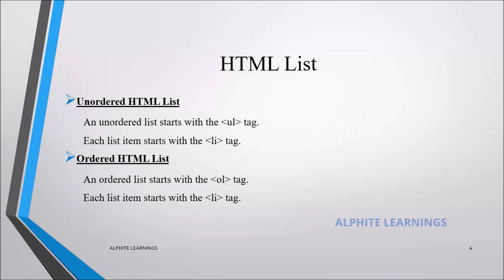The second topic today is HTML lists. A list is used to display a collection of items — for example, top 10 websites, top 10 code editors, or top 10 richest persons in a country. In HTML we have two types of list: unordered HTML list and ordered HTML list.